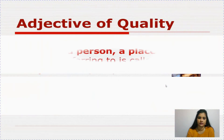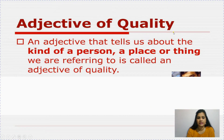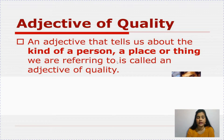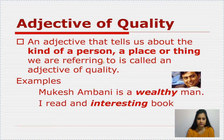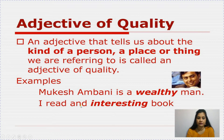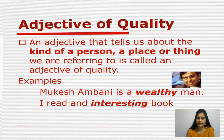First is adjective of quality. An adjective that tells us about the kind of a person, place or thing we are referring to is called an adjective of quality. It tells the quality of a thing or a person. For example: Mukesh Ambani is a wealthy man — man is the noun and 'wealthy' is an adjective of quality. Another example: I read an interesting book — book is the noun and 'interesting' is the adjective.